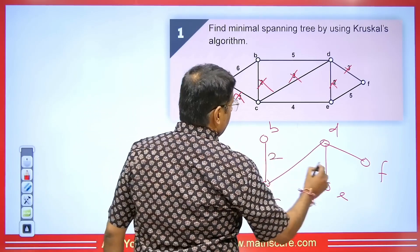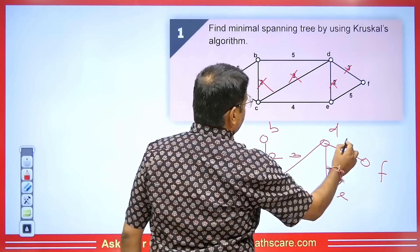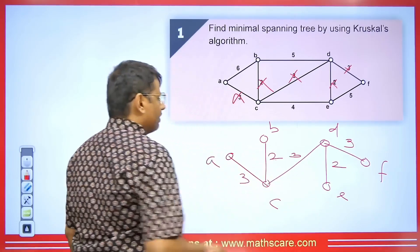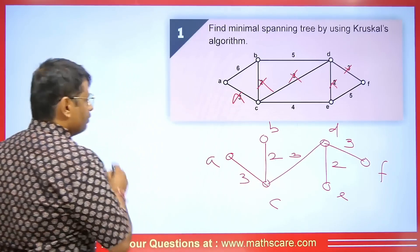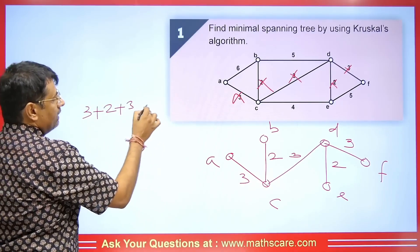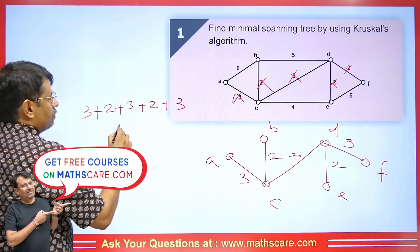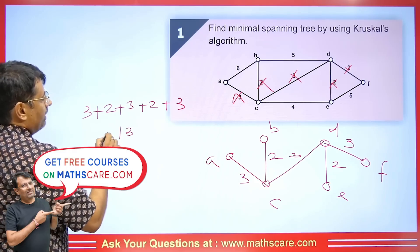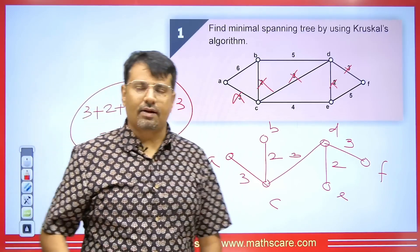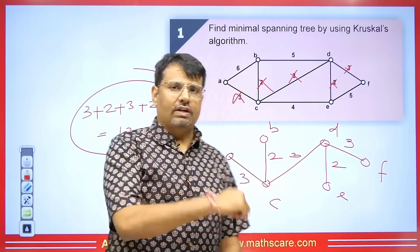Let's check the weight: it's 2, 2, 3, 3, and 3. The total weight is 3+2+3+2+3=13. This is the minimal spanning tree by Kruskal's algorithm, and we can solve this question easily this way.